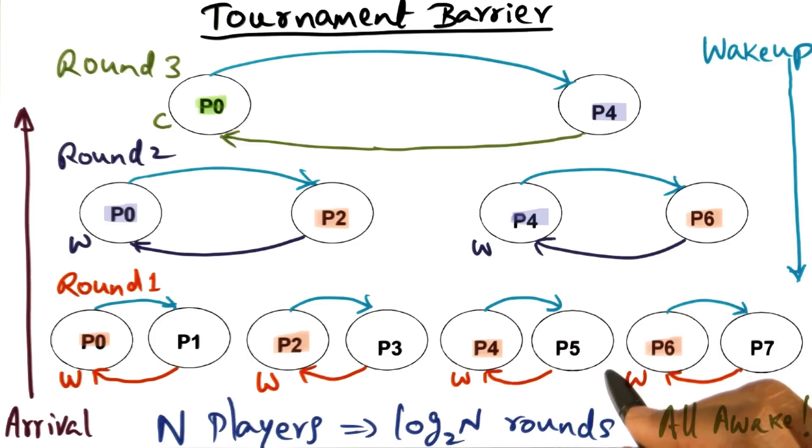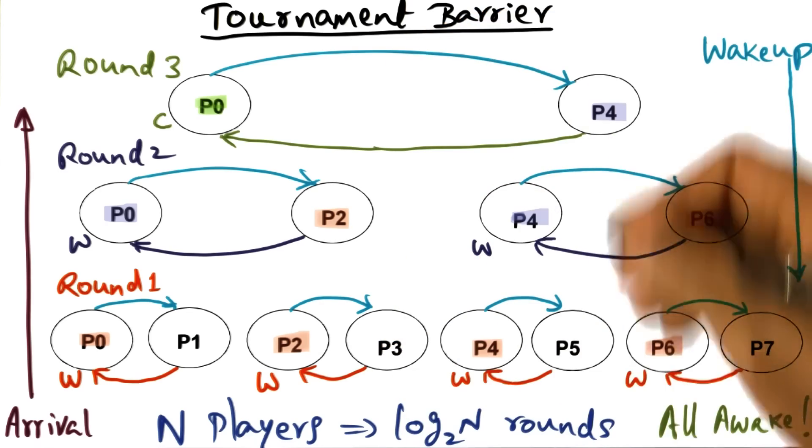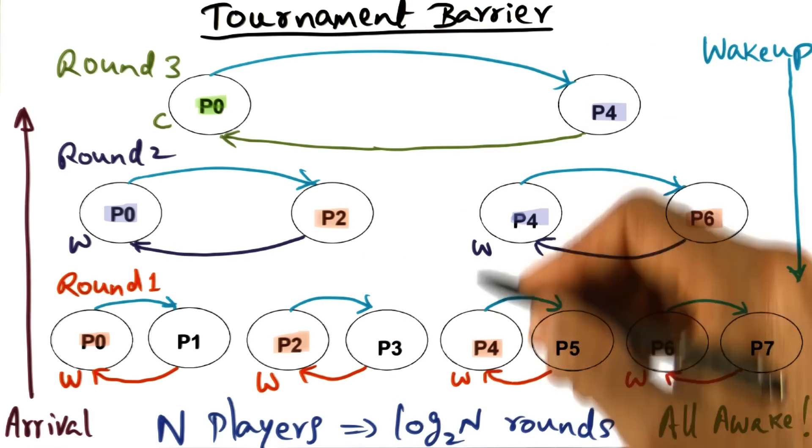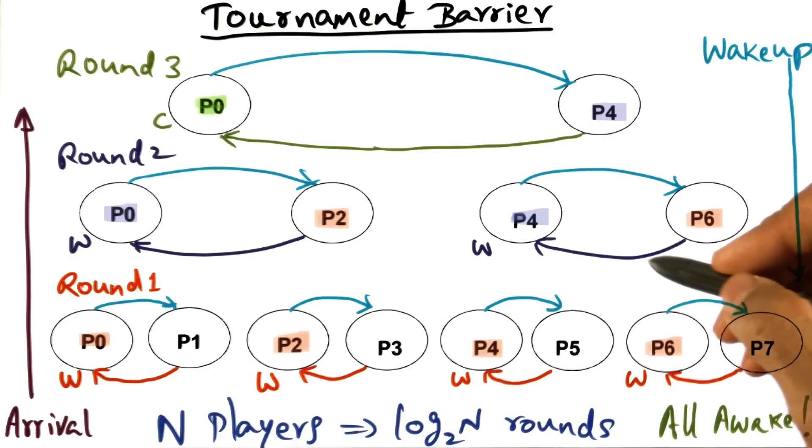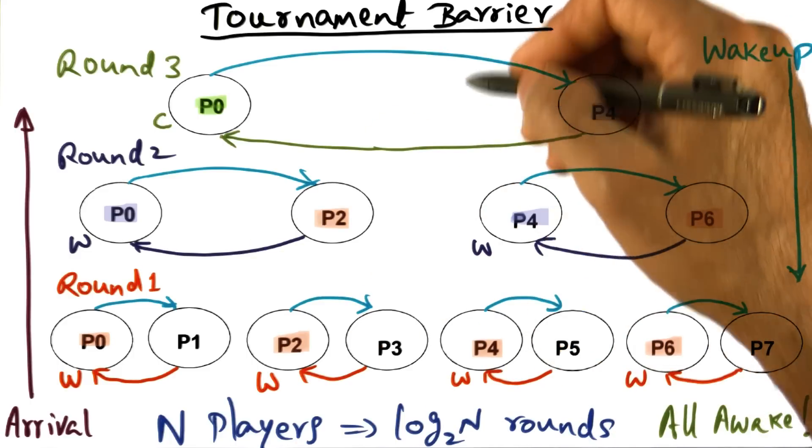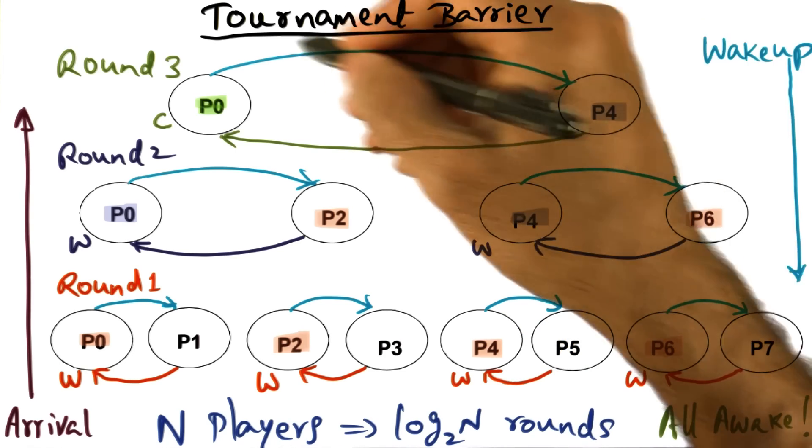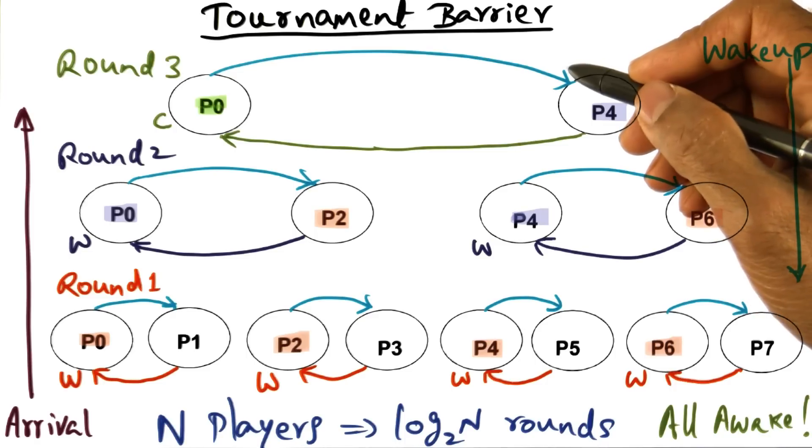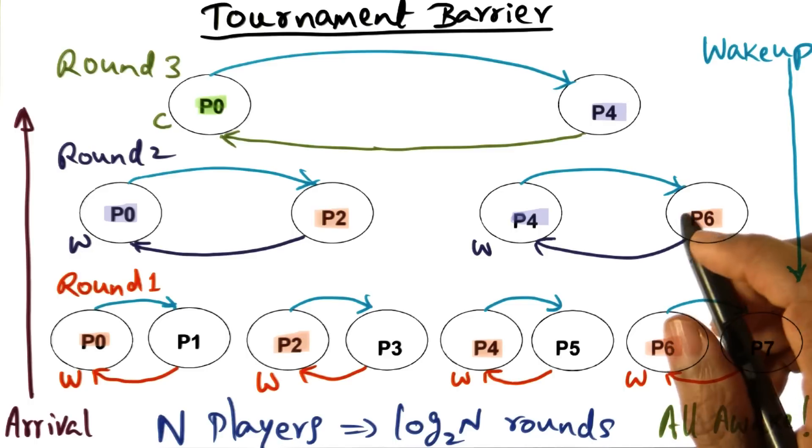Now what about the total amount of communication that is needed? It's exactly similar because of the tree arrangement. As you go up the tree, the amount of communication that happens is going to decrease because the tree is getting pruned as you go towards the root of the tree. The amount of communication in the tournament barrier in terms of order notation is exactly similar to the tree barrier. It is order log n.